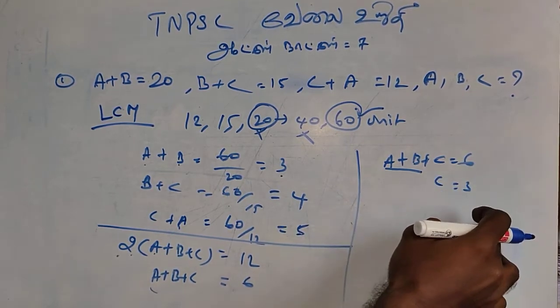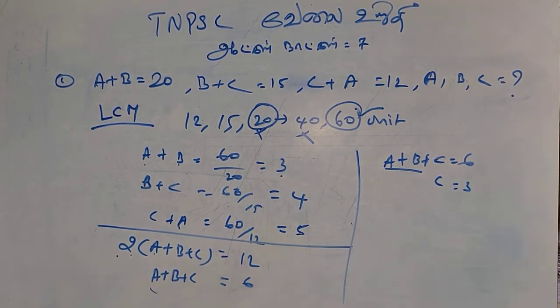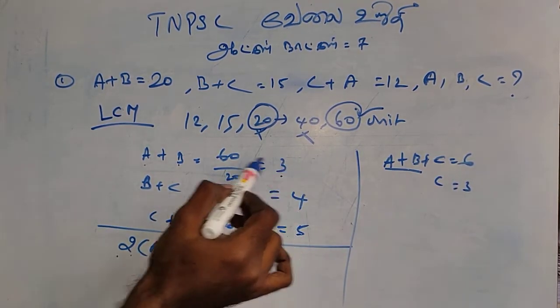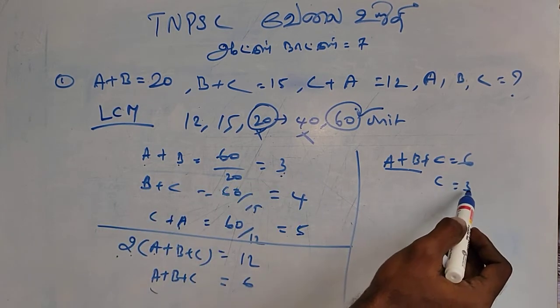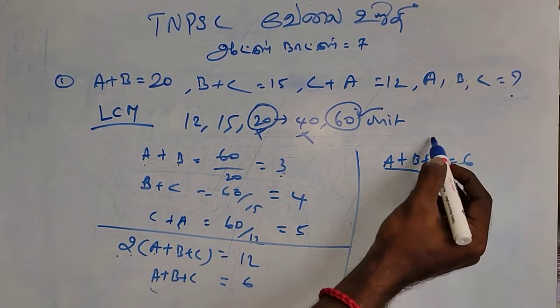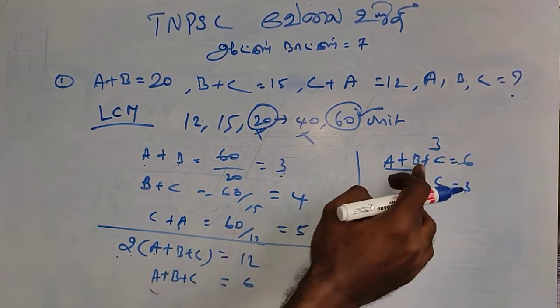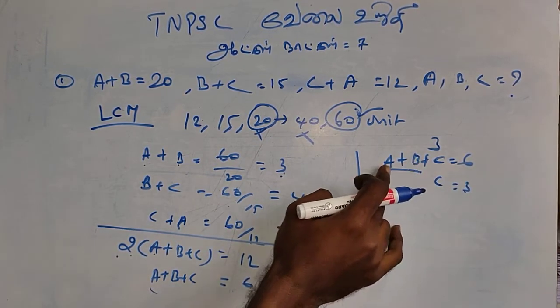Now, what is c equals 3? So, with a plus b you can see a plus b equals 3, then we substitute c equals 4. So, b plus c equals 4. As a plus c equals 4, then what's the number?